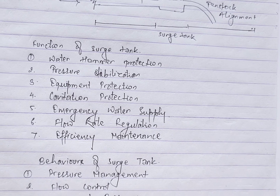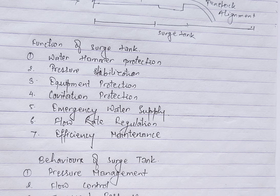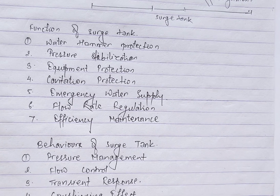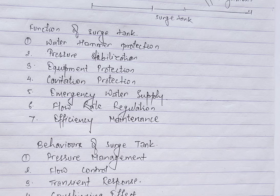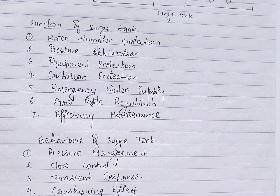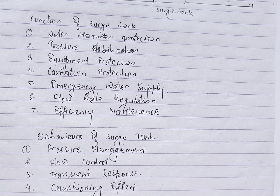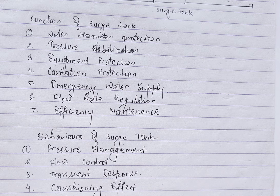The next behavior is flow control: source tanks smooth out variations in fluid flow, ensuring a constant and controlled rate. Next is transient response: source tanks provide a temporary buffer, responding to rapid changes in demand until a new equilibrium is reached. They also act as a cushion, reducing the impact of hydraulic shocks and protecting system components.